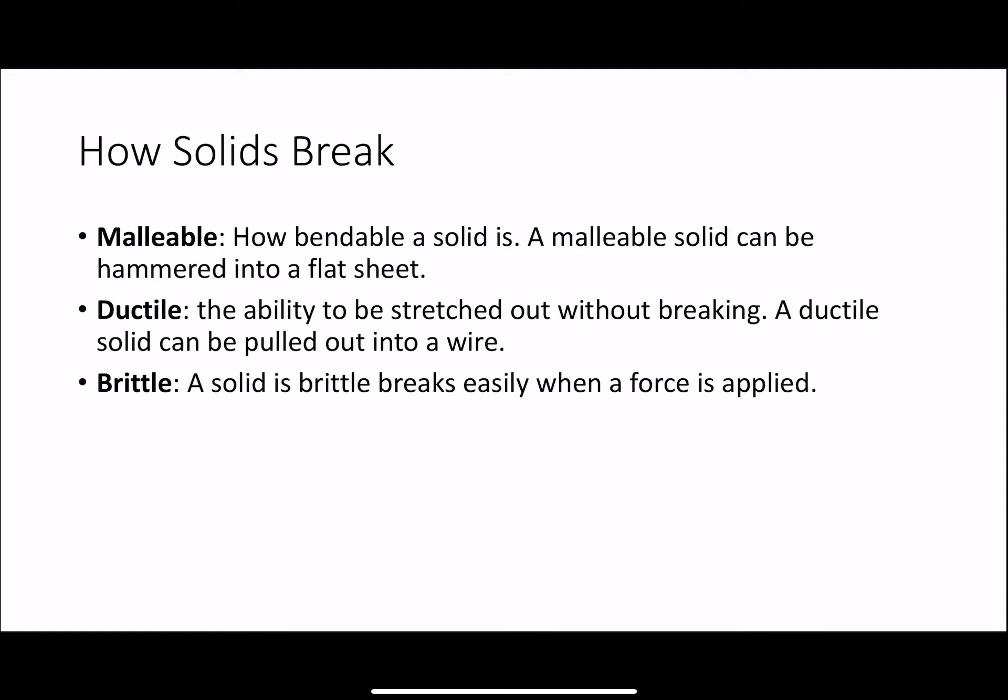Speaking of how solids break, there are three different ways that solids can react when they have a force exerted on them. The first one is that they could be malleable. Malleable is how bendable a solid is. A malleable solid could be hammered flat into a sheet. If you had a piece of solid and you hit it with a hammer, it would flatten out and not break. That's called malleable. Ductile is the ability to be stretched out without breaking. If you have a ductile solid, you can pull on the edges and pull it all the way out into a wire and it will not break.